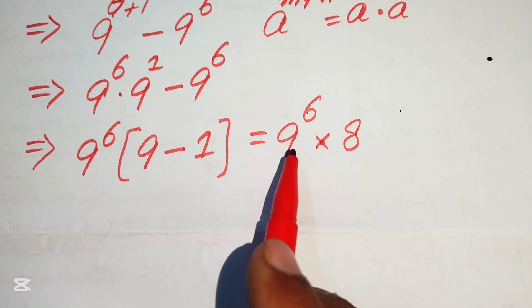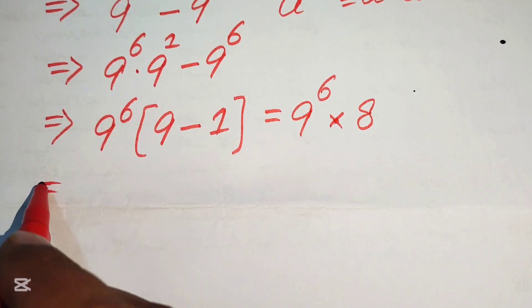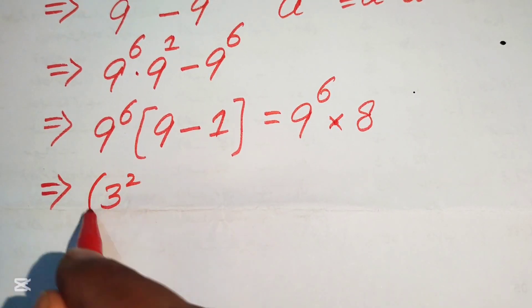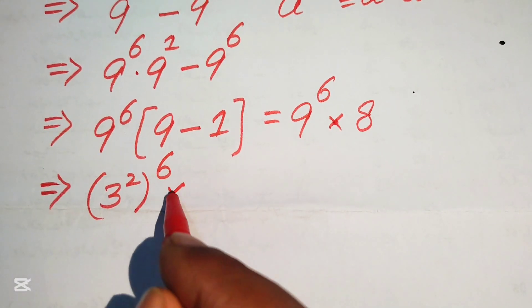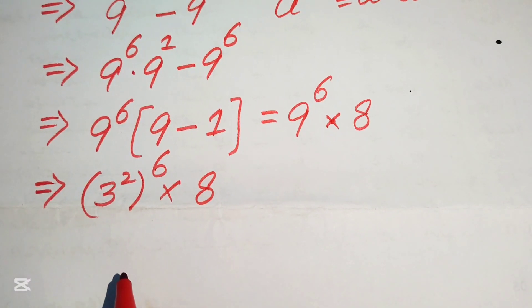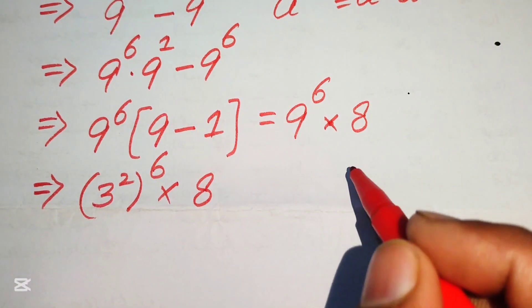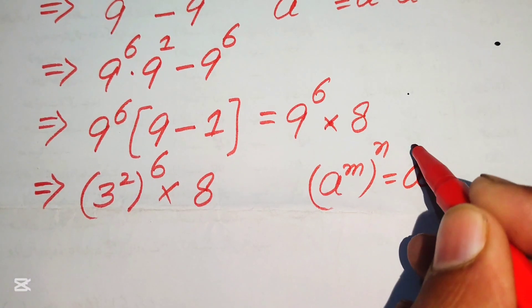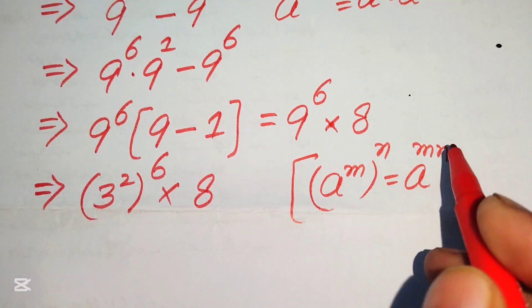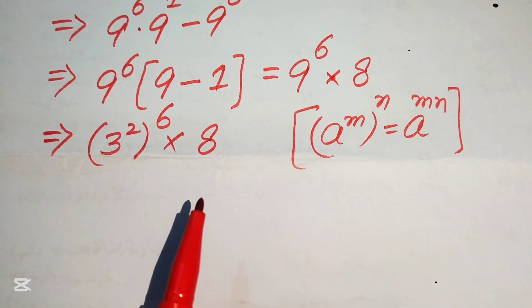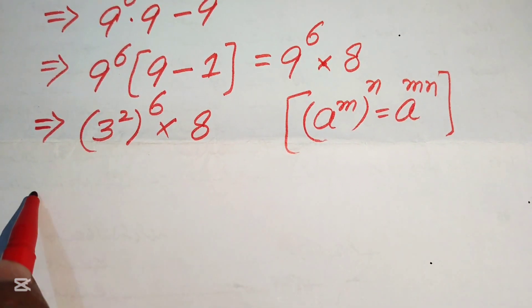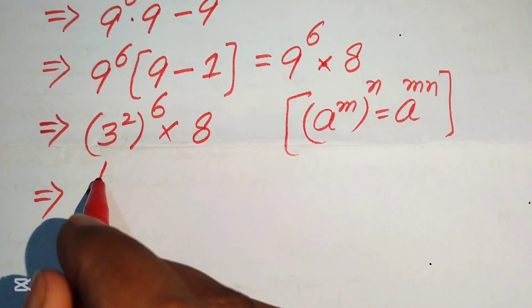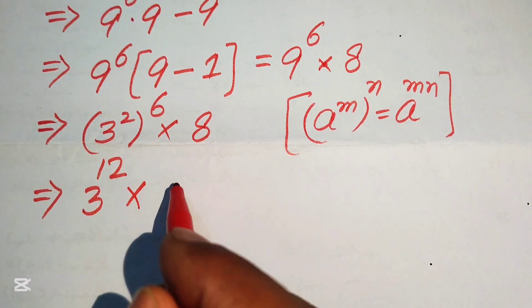Now we focus on the term 9 to the power of 6. We write 9 as 3 squared, so its exponent is 6, multiplied by 8. We use another exponent law: a to the power of m to the power of n equals a to the power of m times n. Applying this, we get 3 to the power of 2 times 6, which becomes 3 to the power of 12, multiplied by 8.